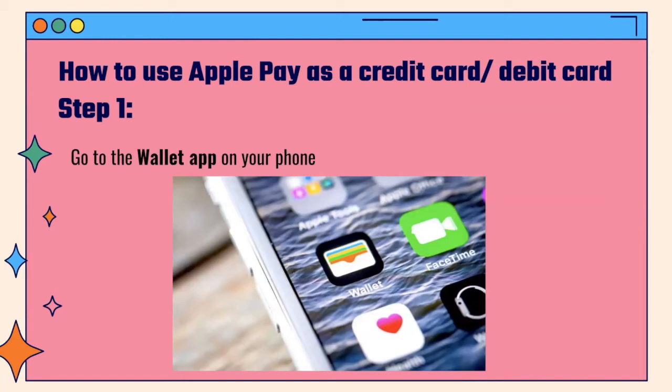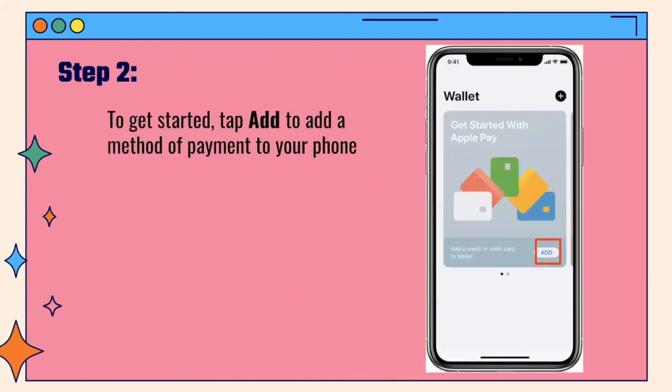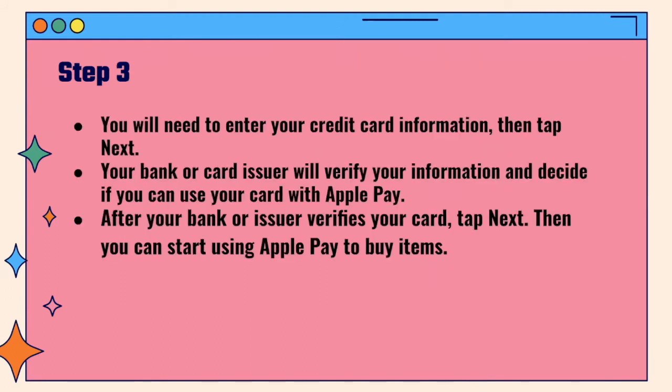How to use Apple Pay as a credit card or debit card. Step one, you'll go to the Apple Wallet on your phone. Step two, to get started, tap Add to add a method of payment to your phone. Step three, you will need to enter your credit card information, then tap Next. Your bank or card issuer will verify your information and decide if you can use your card with Apple Pay. After your bank or issuer verifies your card, tap Next. Then you can start using Apple Pay to buy items.